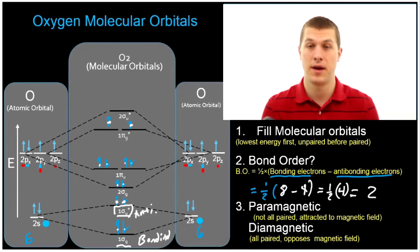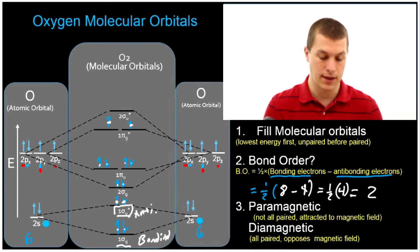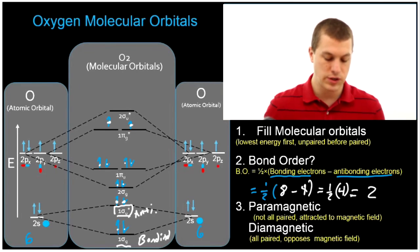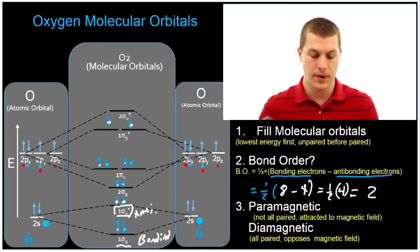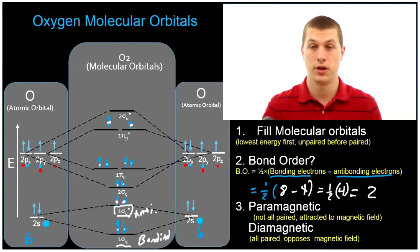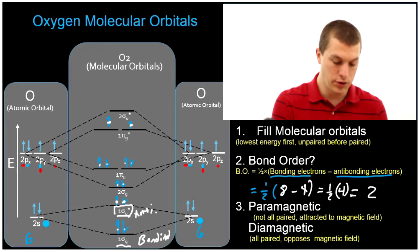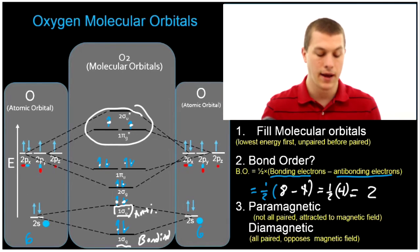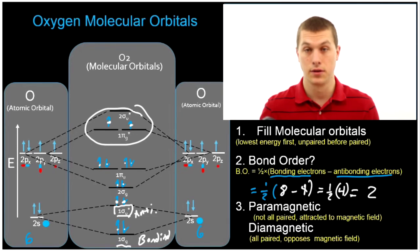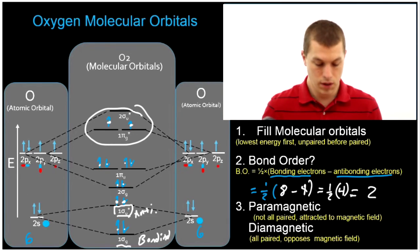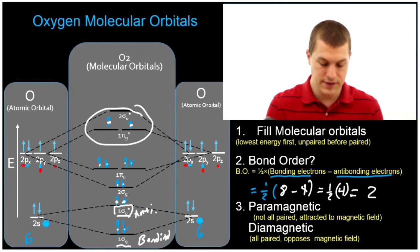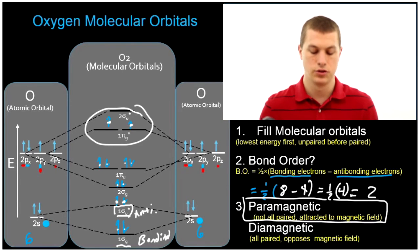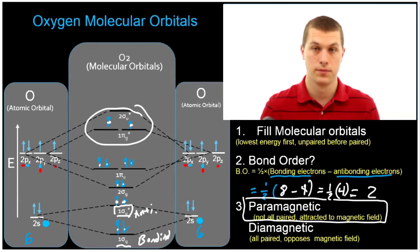Now we can decide if it's paramagnetic or diamagnetic. If not all of our electrons in our molecular orbital are paired, then we say that's paramagnetic. You'll notice that these two electrons up here in our 1 pi antibonding orbital are unpaired, and that means that oxygen is paramagnetic — it will be attracted to a magnetic field.